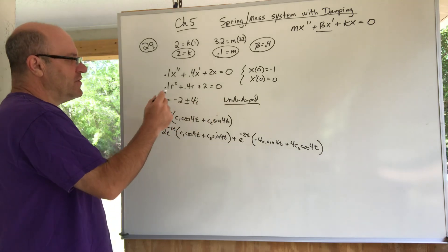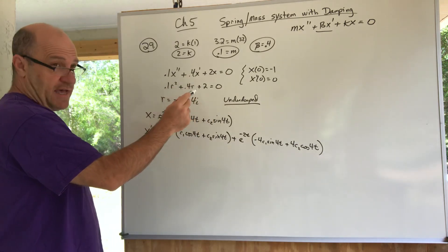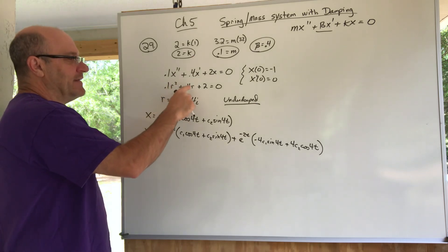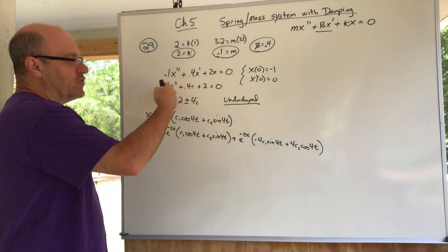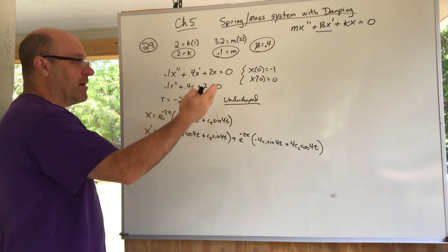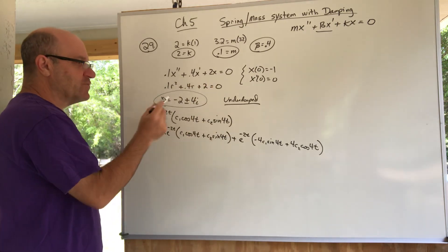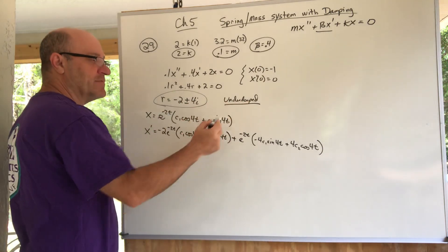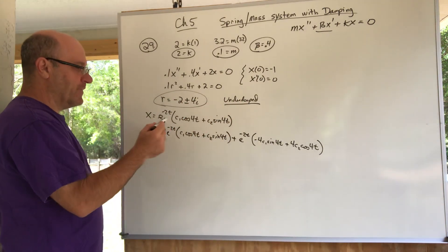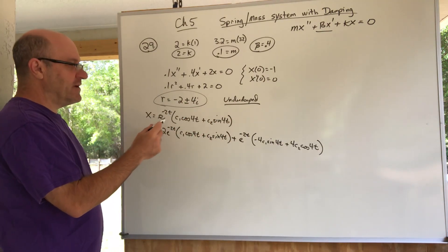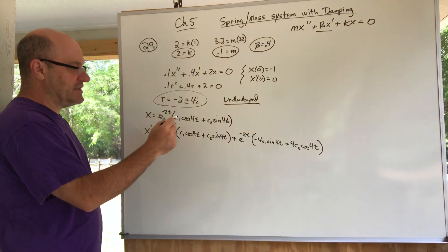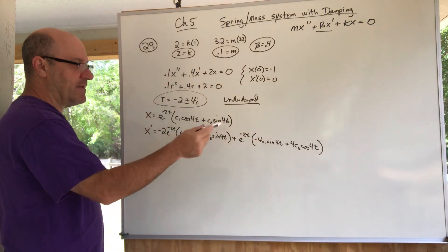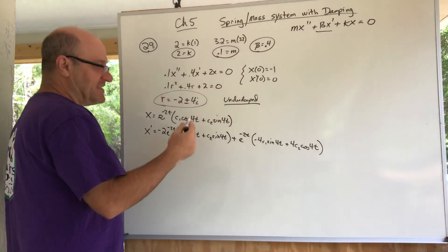We set up the auxiliary equation and apply the quadratic formula. You can multiply through by 10 to clear the decimals. We do get complex roots, which means we're in an underdamped situation.